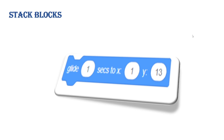Glide to X and Y: here you can specify both the pace and the target X and Y coordinates. By default the pace is 1, but you can change it. Your sprite will glide to the particular position on the stage corresponding to the X and Y axis values you provide, at the speed or pace you have mentioned.